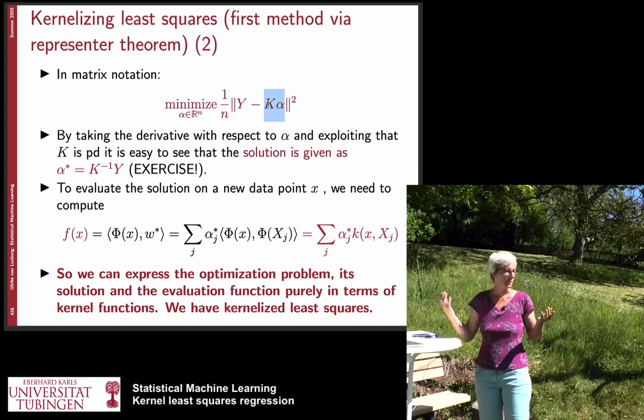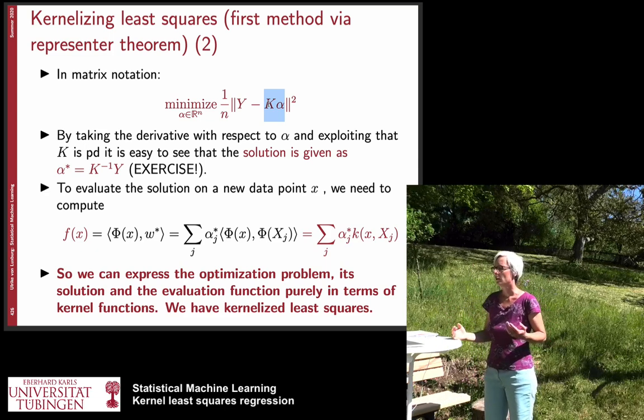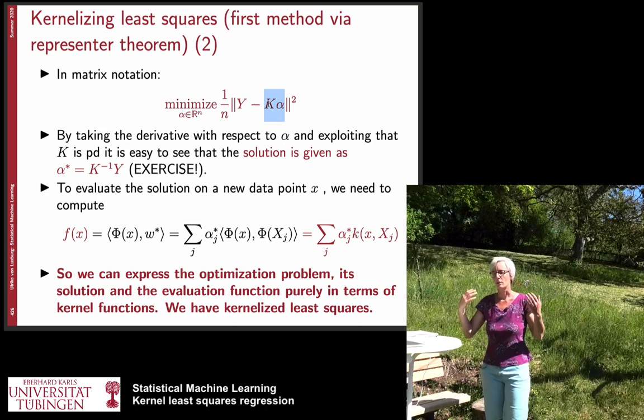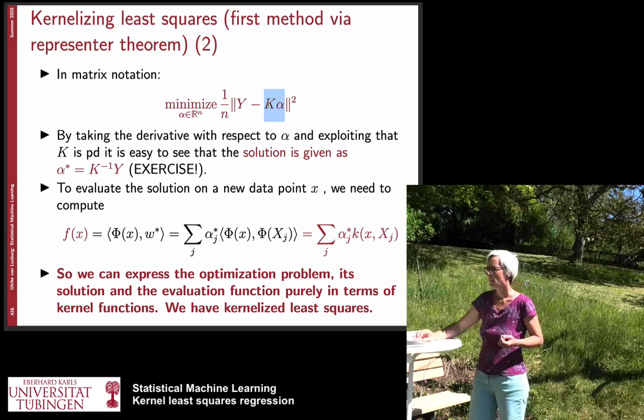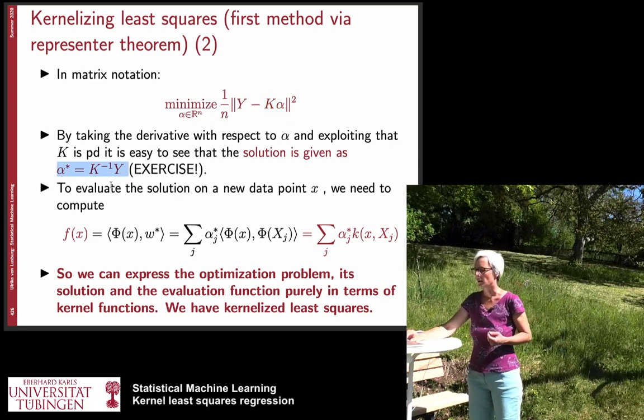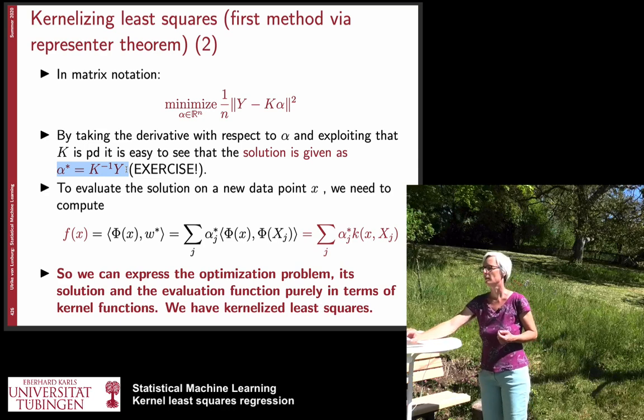And now of course how can we solve that? We can now do exactly the same kind of thing as we have done in the previous lecture. We take the derivative, we set it to zero and so on and then we can find that the solution of this problem is given by this vector k to the minus 1 times y.